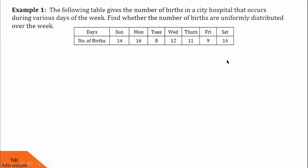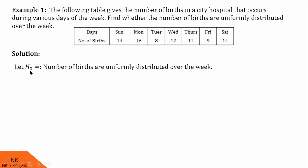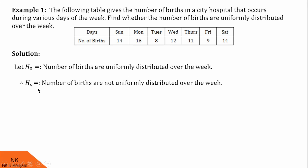Now, let us proceed for the solution. As discussed, the steps involved in chi-square test, in step 1, we define null and alternative hypothesis. So let us define null hypothesis H0 as: number of births are uniformly distributed over the week. By saying this, we are saying that there is no difference between the observed frequencies and the expected frequencies. Therefore, this data is uniformly distributed over the week. HA, that is the alternative hypothesis, will be opposite of this. So HA is defined as: number of births are not uniformly distributed over the week.